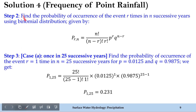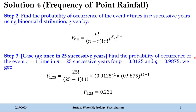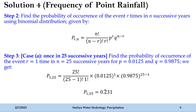In step 2, we find the probability of occurrence of the event r times in n successive years using the binomial distribution formula. In step 3, we solve case A: once in 25 successive years. Here r = 1 and n = 25. With p = 0.0125 and q = 0.9875, substituting into the binomial distribution equation and solving, we get the probability of occurrence exactly once in 25 successive years as 0.231. I hope you were able to follow the first part.